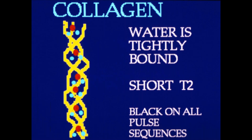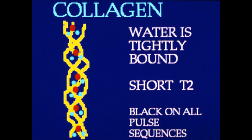If you look at collagen fibers, it's a triple helix. Inside that triple helix you've got water that's bound to the collagen fibers. When this is normal it has a very short T2 time, so it's black on both T1 and T2 sequences. When you start getting degenerative changes, you get tears of the collagen fibers — the torn fibers absorb more water, so you get more water in that location. That water is still mostly bound, so the T2 isn't very long. It tends to be dark on T2-weighted images, but since you have more water and more hydrogen molecules, you start getting increased signal intensity on the short TE images. This is what we typically call tendinosis or mild degenerative changes.